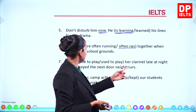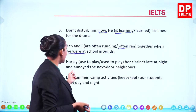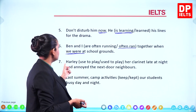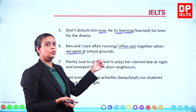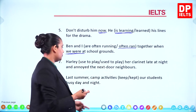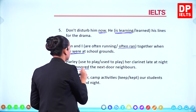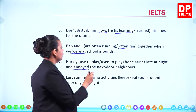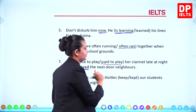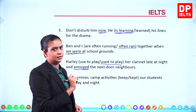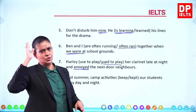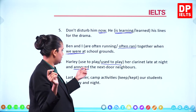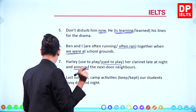'Harley used to play her clarinet late at night and annoyed the next door neighbours.' Because 'annoyed' is in the past, Harley used to do it — and it annoyed her neighbors. So the answer is 'used to play.'